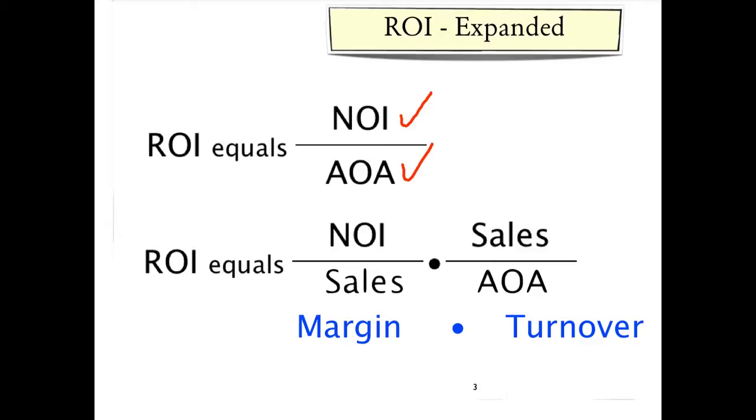It is often useful to decompose the return on investment into a portion which is called the margin, which is net operating income over sales, and a portion that is called the turnover, sales over average operating assets.